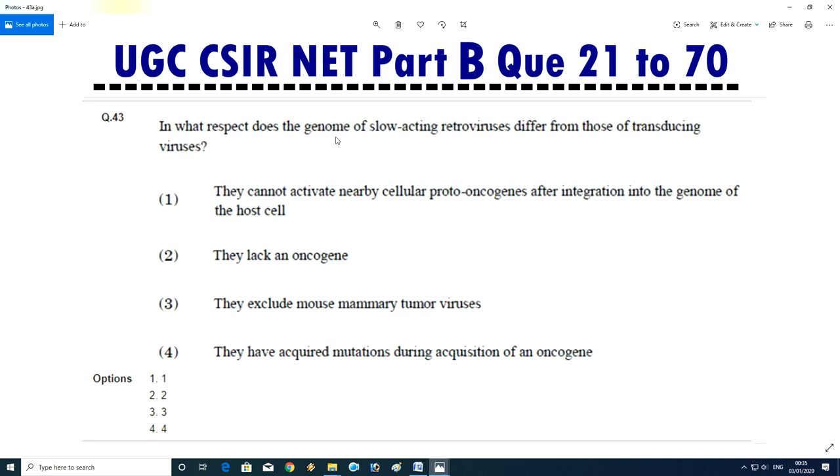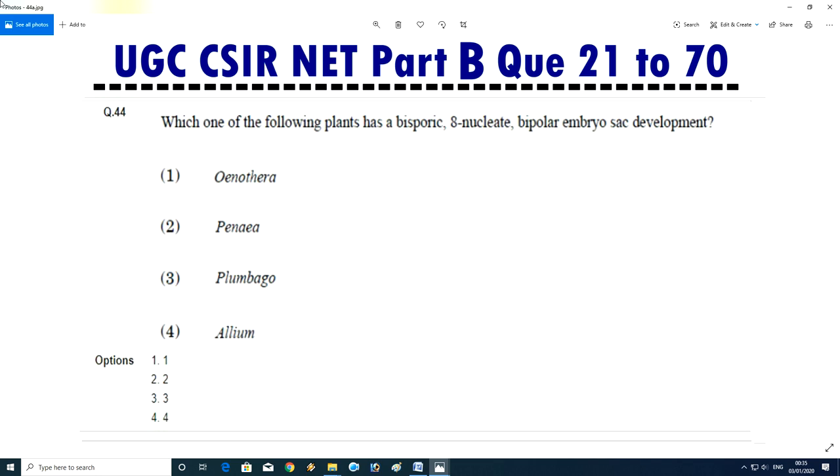Question No.44 - In what respect does the genome of a slow-acting retrovirus differ from those of transducing virus? They cannot activate nearby cellular proto-oncogenes after integration into genome of host cell. They lack an oncogene. They exclude mouse mammary tumor virus. They have acquired mutation during acquisition of an oncogene. Answer is second, they lack oncogene.